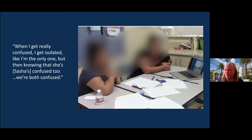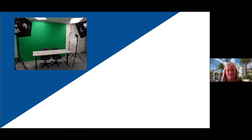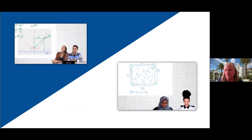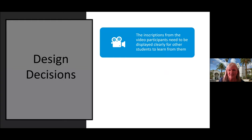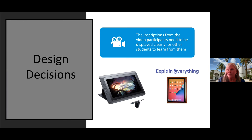Another design decision we made was that because of the pandemic, we had to quickly develop a protocol for filming remotely. Prior to the pandemic, we had a film studio where we could film students, and then we had to bring green screens out to kids' homes and film virtually. But the look of the videos is very similar — and Halima and ET, who you just watched, were actually filmed remotely. Another decision was that the inscriptions from the video participants really had to be displayed clearly for other students to learn from them. When we were in the studio, we used a Cintiq display unit, and for the remote version we used the Explain Everything digital whiteboard with iPads.